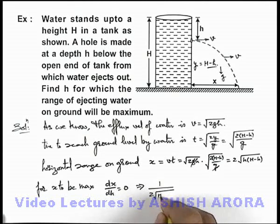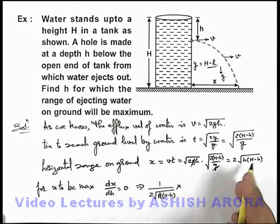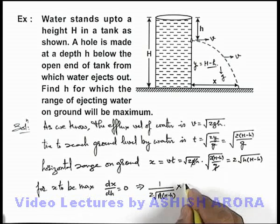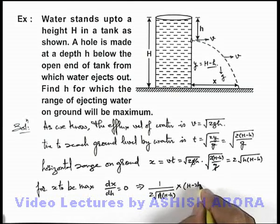Into H minus small h, multiplied by the differentiation of this term, which can be written as H minus 2 small h.